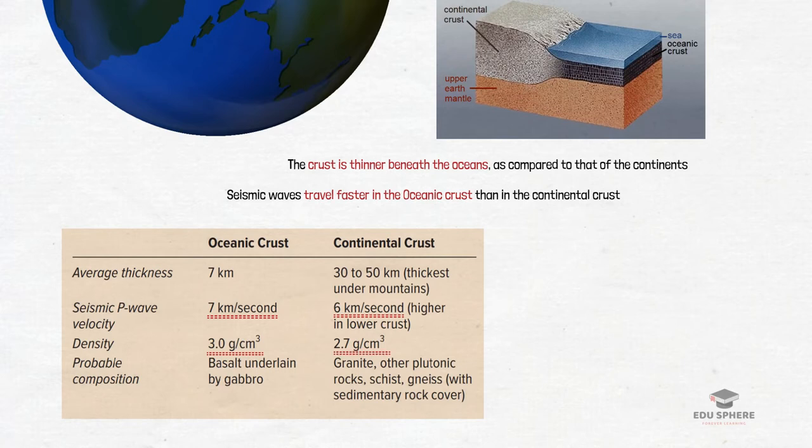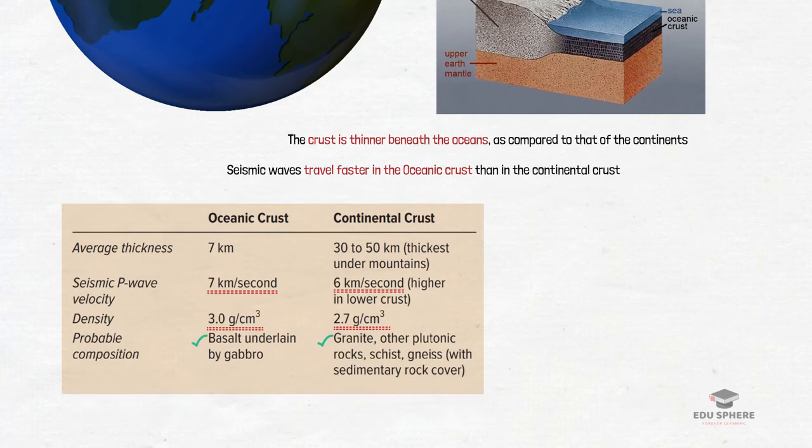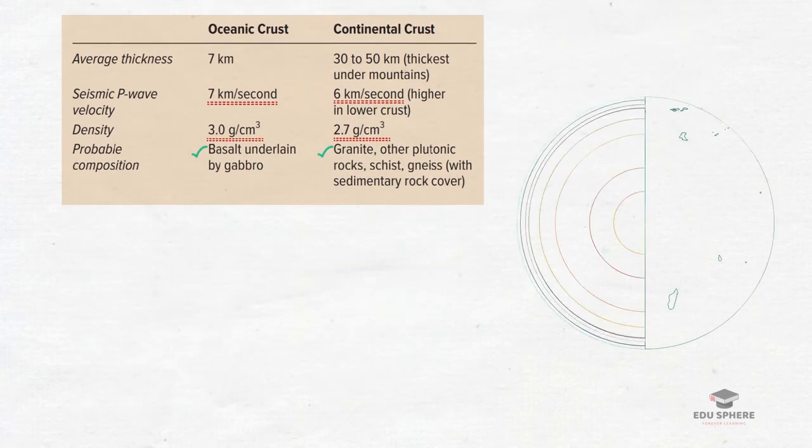The oceanic crust is mostly made of basaltic rocks whereas the rocks that make up the continental crust are less dense than the basaltic oceanic crust. Granite is a mineral that's a major component of the continental crust. Do remember that the oceanic crust may be heavier and denser but the continental crust is a thicker and older part of the Earth's crust.